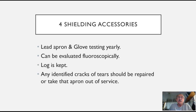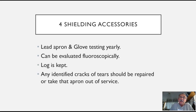We also have shielding accessories — lead apron and glove testing, done on a yearly basis. Typically that can be done fluoroscopically as opposed to taking X-ray images. We keep a log of our shielding accessories and whether or not they have any cracks or splits in them. Any identified as having cracks or tears should be repaired, or we take that apron out of service. Remember, they have lead in them, so they need to be disposed of as hazardous waste.